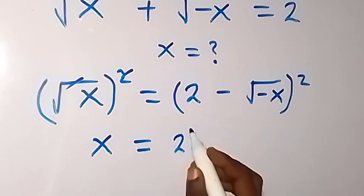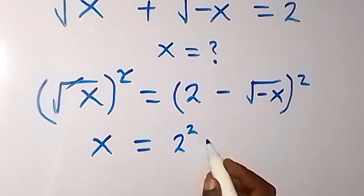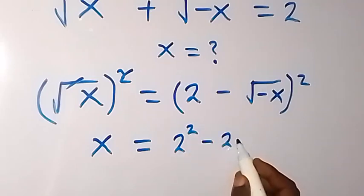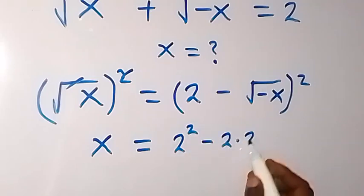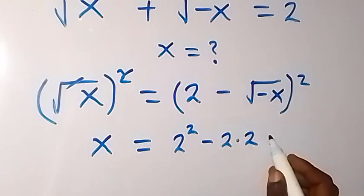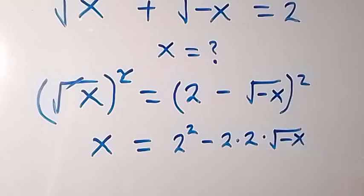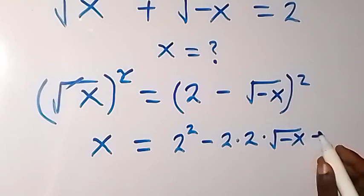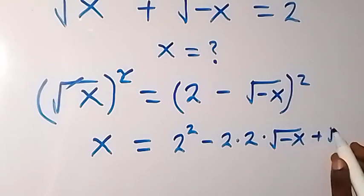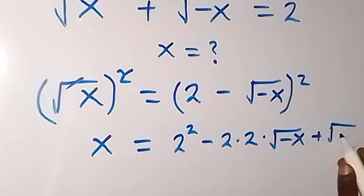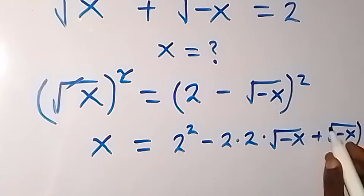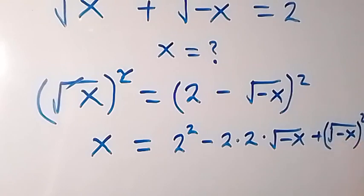We expand the right side. This gives us 2 squared minus 2 times 2 times root of minus x, then plus root of minus x squared. This is how we expand this bracket.